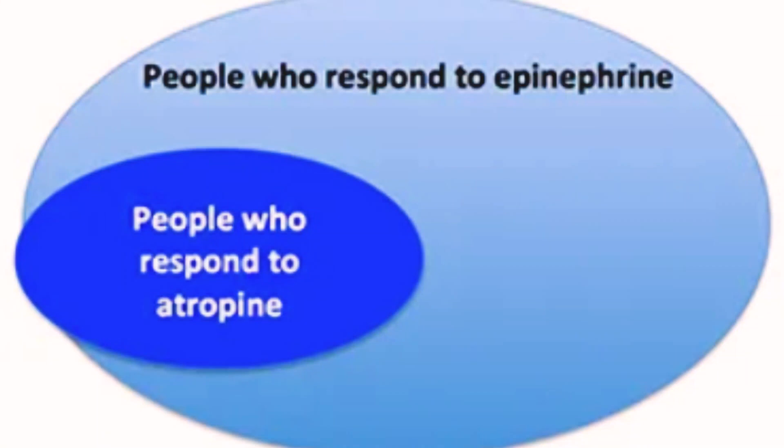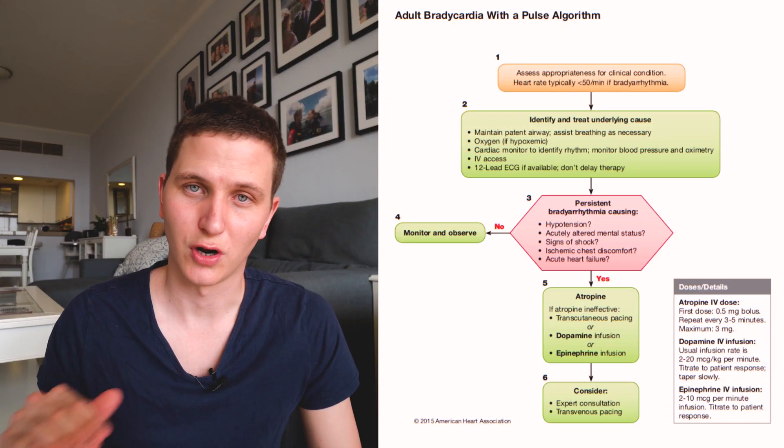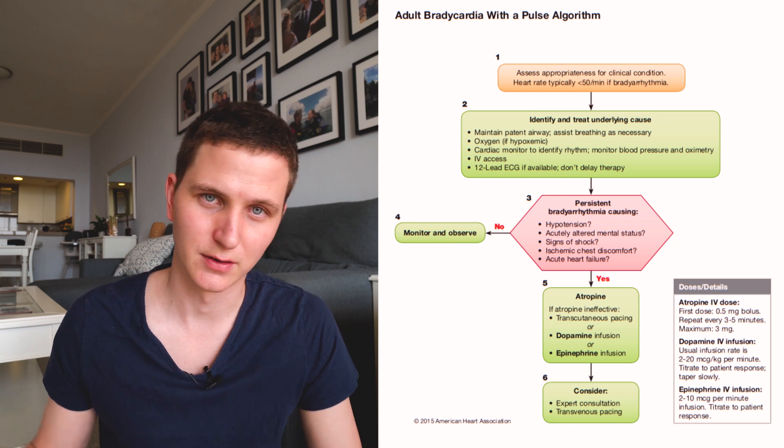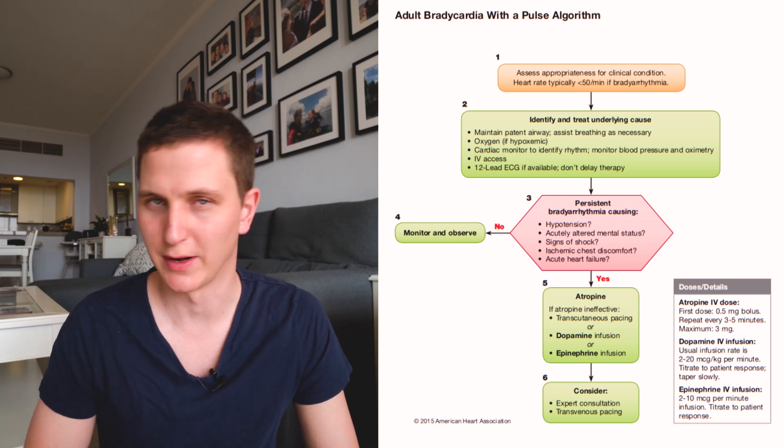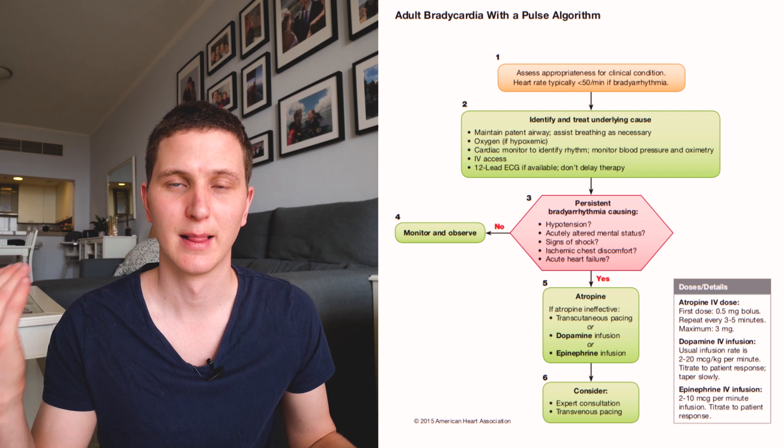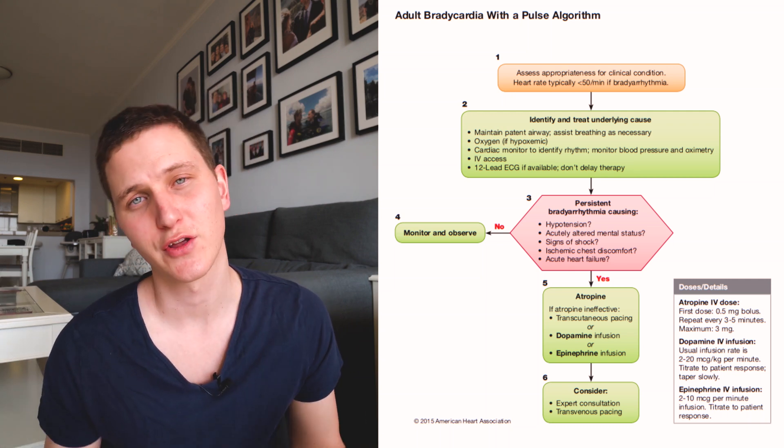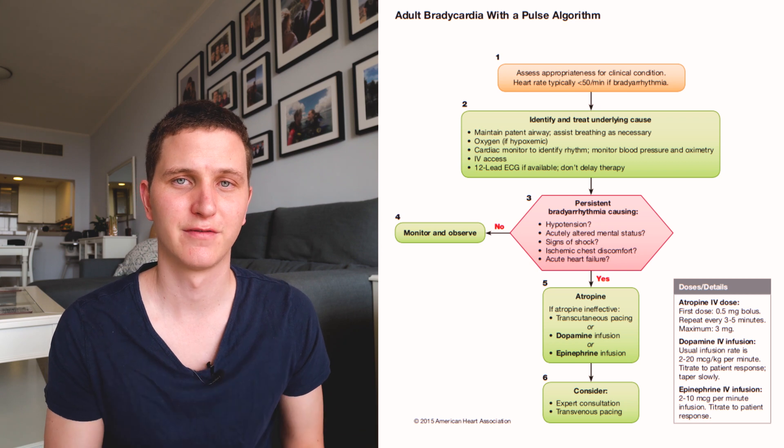Then you come down to the bottom of the algorithm, and it says transcutaneous pacing, adrenaline, inotrope, or dopamine. How do you make the decision? If you have a bradycardia due to a cardiac origin — the patient is having a third degree or second degree block, something is wrong with the heart — pacing would be the best thing. It's the heart that's the problem, so we want the heart to actually contract better, and if it can't contract because of a third degree block, adrenaline may not be the most effective thing.